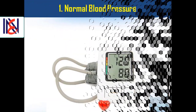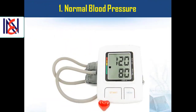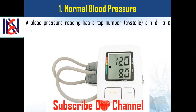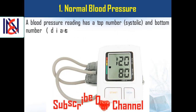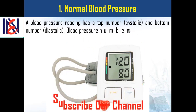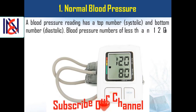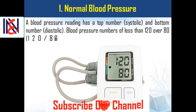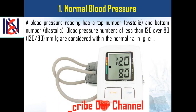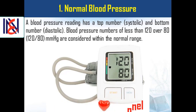1. Normal blood pressure. A blood pressure reading has a top number (systolic) and a bottom number (diastolic). Blood pressure numbers of less than 120 over 80 mmHg are considered within the normal range.